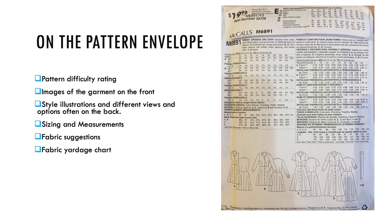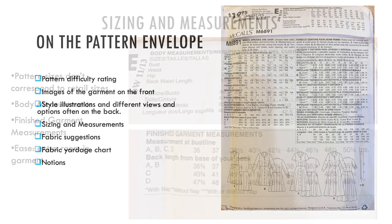You should also see a fabric yardage chart. It usually includes how much yardage you will need for each size depending on the width of your fabric. Check the yardage chart for the different widths, sizes, and views — this will determine how much fabric to purchase. You'll also want to check for a list of notions. Your pattern will list other items that you'll need such as interfacing, buttons, zippers, thread, or hook and eye closures.